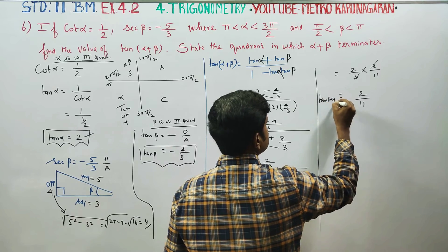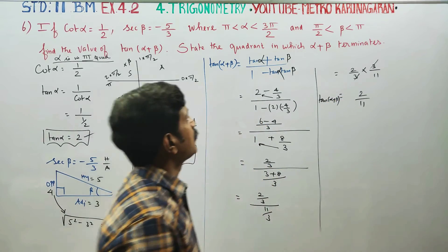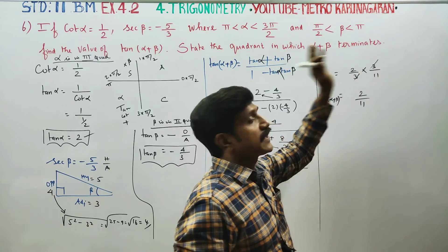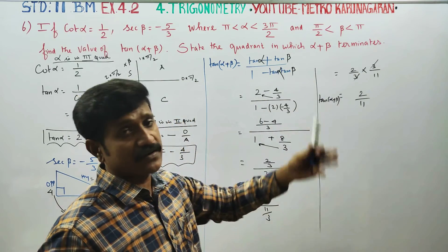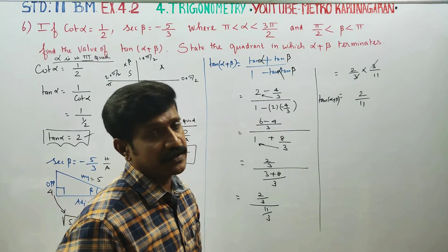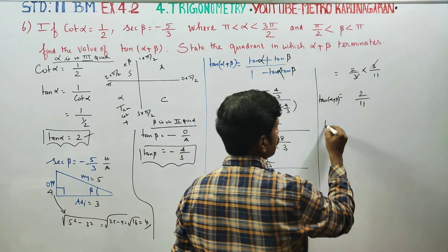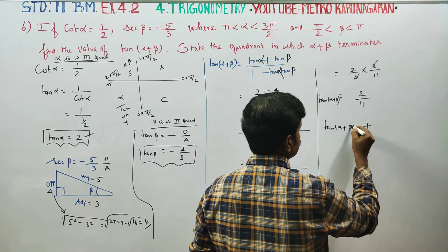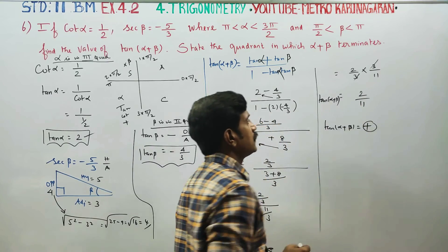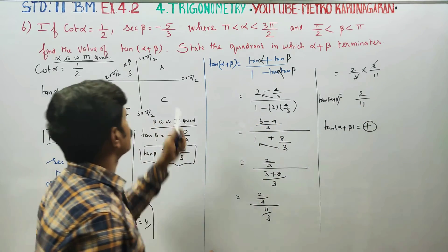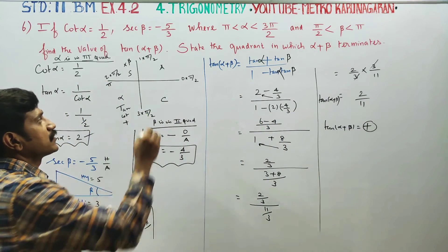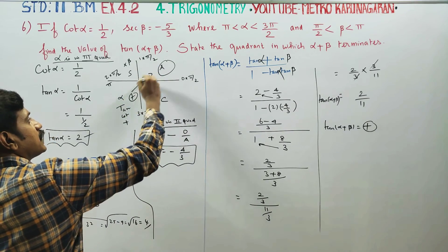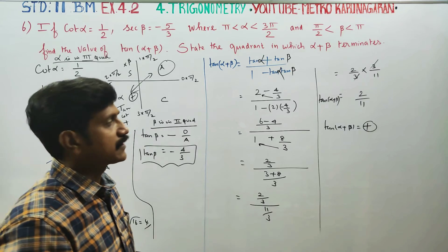Now, tan(α + β) is 2 by 11, which is a positive answer. Since the value is positive, alpha plus beta lies in either the 1st quadrant or the 3rd quadrant. We determine it is in the 1st quadrant.